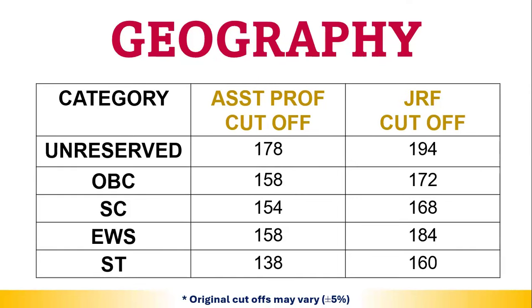Next, Geography students — for the unreserved category, the Assistant Professorship cutoff is 178, and JRF will be 194. The remaining categories' cutoffs can be seen at a glance.